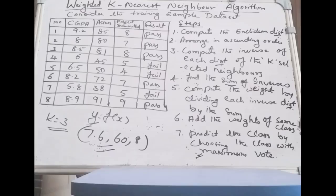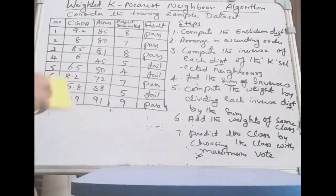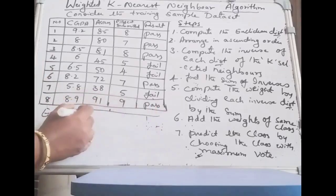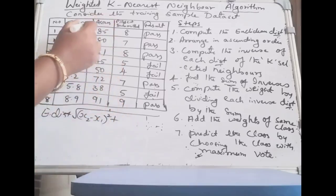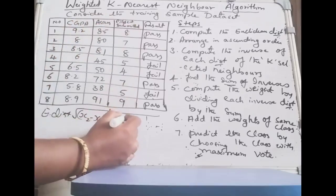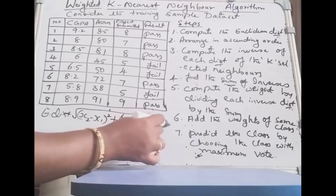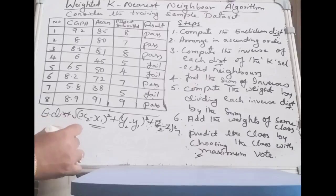Now, how do we calculate the Euclidean distance? The formula is: root of (x2 - x1)² + (y2 - y1)² + (z2 - z1)², since we have three attributes x, y, and z. For my test instance — 7.6, 60, 8 — these values are treated as x1, y1, z1, and each row in the dataset is x2, y2, z2.